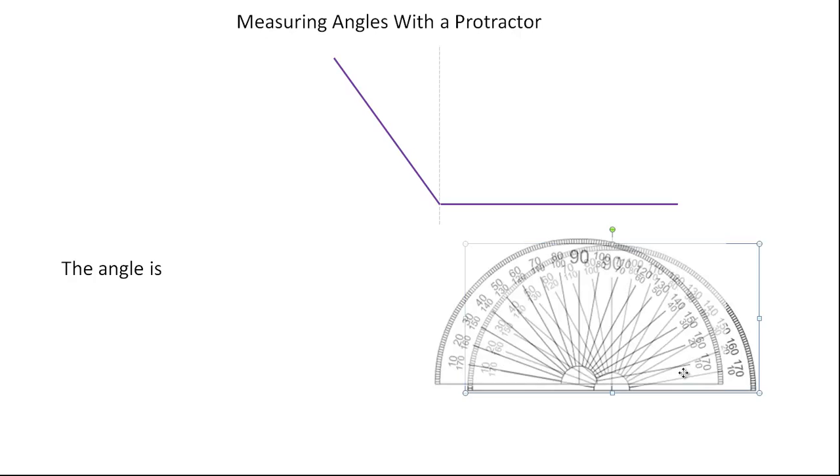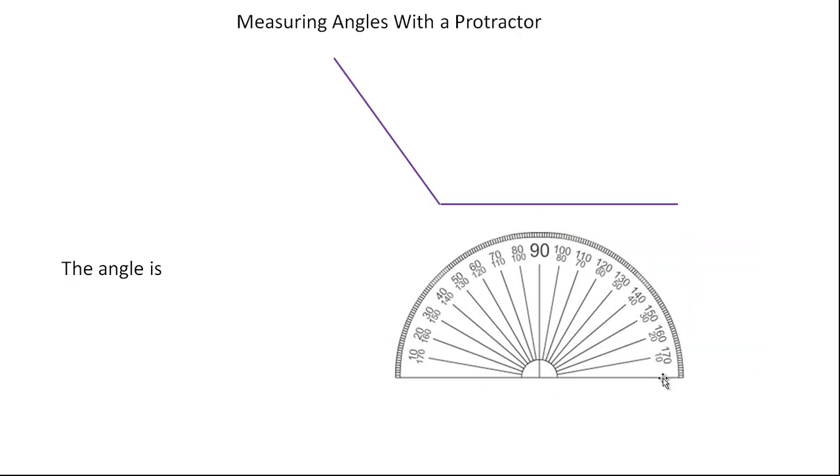So now, in a protractor, there's two scales. It depends on whether you're measuring the angle from this side or from this side. So notice there's a 10, 20, 30, so this would be zero here. So if I'm measuring in this direction, I'm going to use the inside scale here.